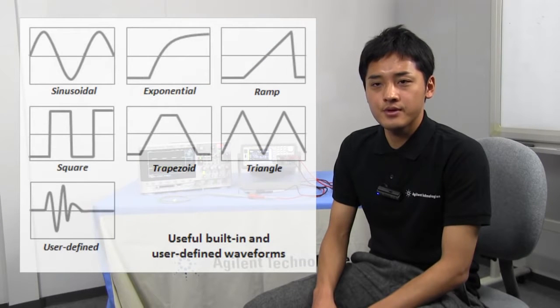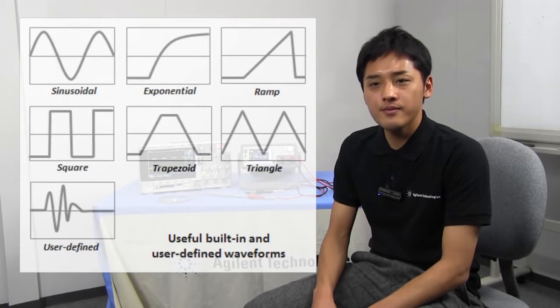B2961A supports precision arbitrary waveform function, and can output clean sinusoidal wave, ramp wave, square wave, and so on. So, it's very useful for the evaluation of electronic components such as AD converters.